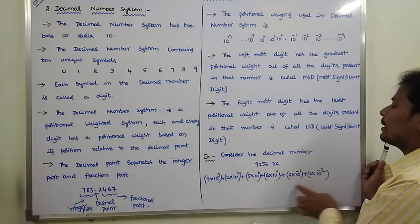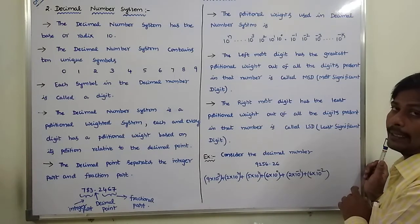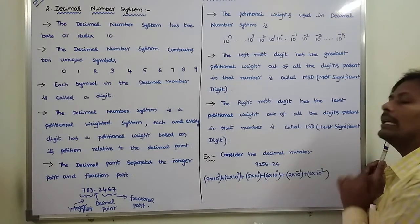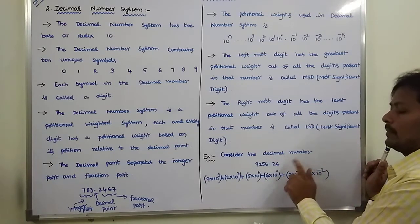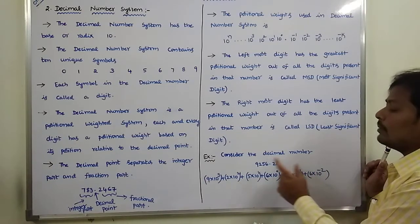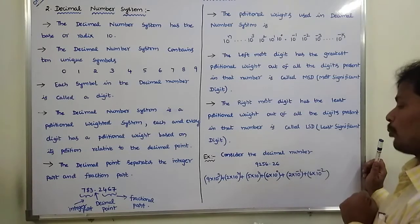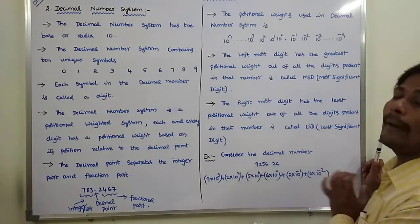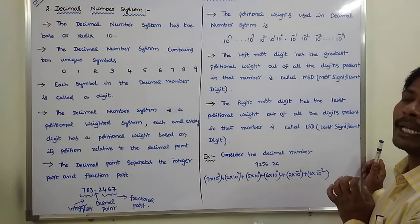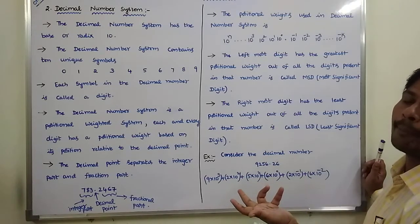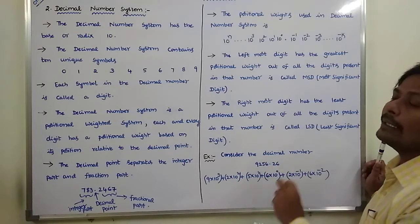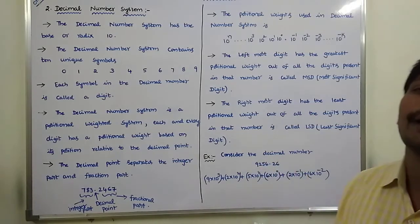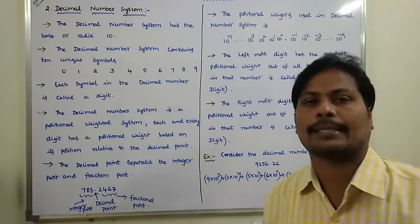These are all called products. By adding these products, we get the decimal value, which is 9256.26. This number is called a mixed number because it contains both an integer part and a fraction part. Now we go to the octal number system.